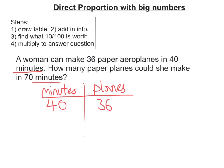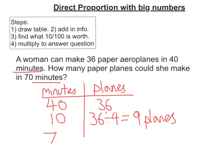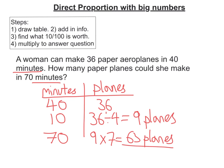This time I'm not going to work out how many planes she makes in one minute — I'm just going to do 10. So 36 planes in 40 minutes: if I divide by 4, it tells me how many she makes in 10 minutes — that's 9 planes every 10 minutes. To work out how many planes she makes in 70 minutes, I multiply 9 by 7 and get 63 planes. So she makes 63 planes in 70 minutes.